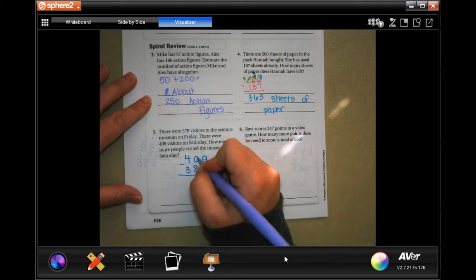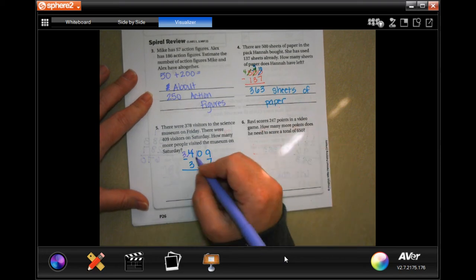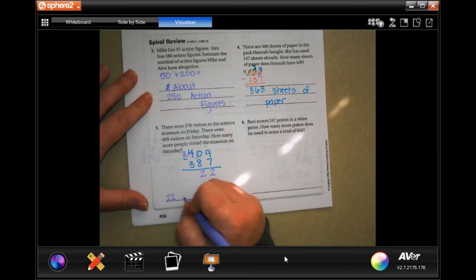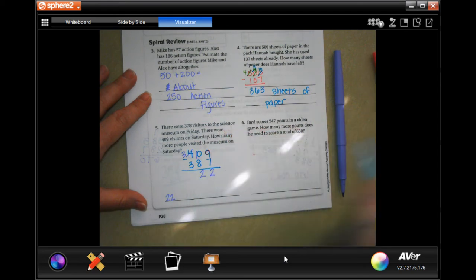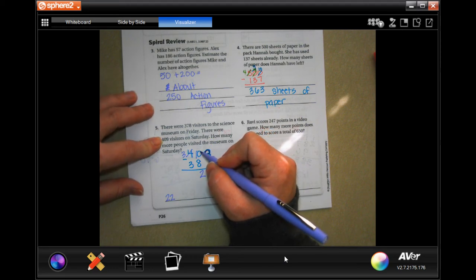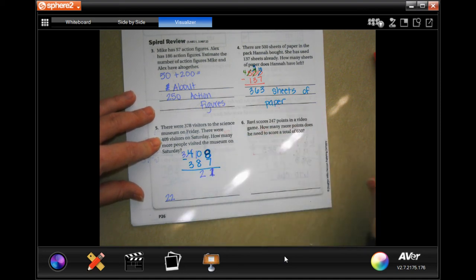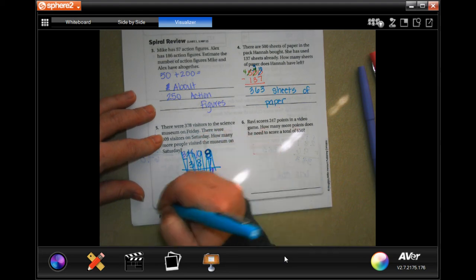9 minus 7 is 2. 0 can't take away anything. So, we're going to go over, borrow, making it a 10. 10 minus 8 is 2. So, 3 minus 3 is 0. So, 22. Oh, sorry, guys. That was an 8. That was an 8. Which makes this a 1, not a 2. Hold on, y'all. Miss Leah messed up this problem big time. Let's do it right.